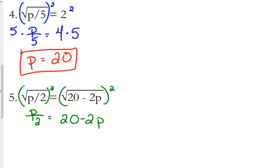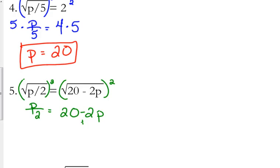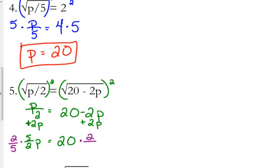So p over 2 must be equal to 20 minus 2p. We haven't had to deal with a variable on both sides yet, but you know how to solve those equations — you need the variable to be on one side. I'm going to move it to the left side. We're adding 2p, so that gives us 2.5p, or 5 halves p, equals 20. To solve, we need to divide both sides by 5 halves, or equivalently multiply both sides by 2 fifths.